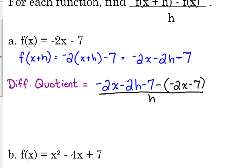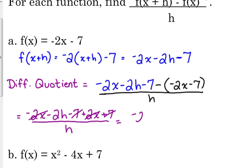We've got to simplify. It's not just about plugging in, we've got to simplify. So we've got negative 2x minus 2h minus 7, we've got to distribute that negative, so that becomes plus 2x plus 7 all over h. We've got negative 2x plus 2x, those cancel. Negative 7 plus 7, those cancel. So we're left with negative 2h over h. Yes, the h's cancel, but I do want you to take the step to show me where it's negative 2h over h. So this difference quotient is equal to negative 2.